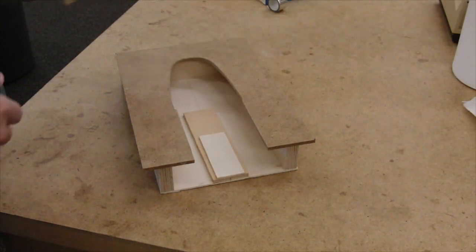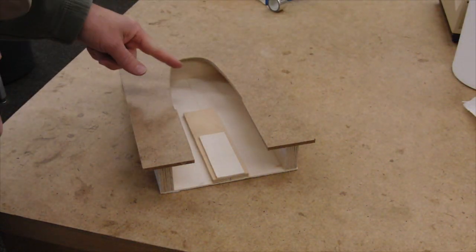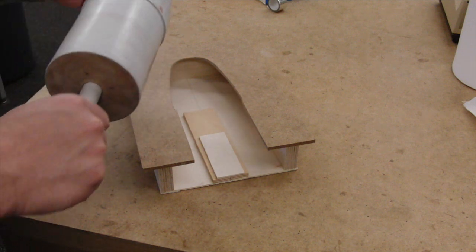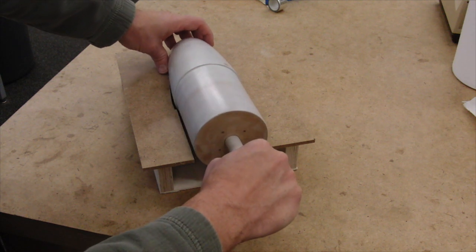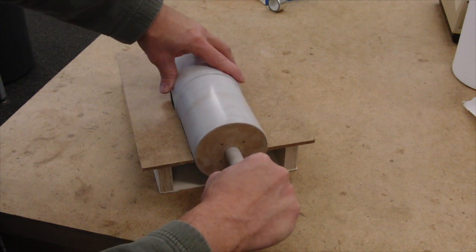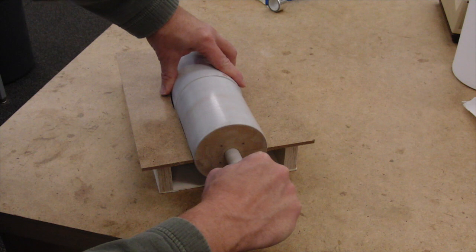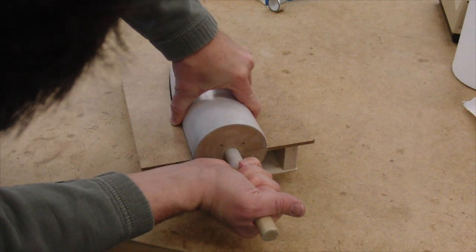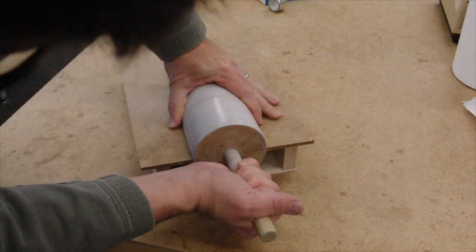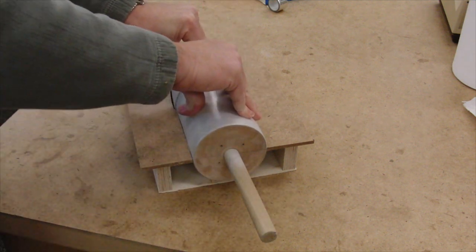Once you've got it to size, use some miscellaneous blocks underneath to shim it up so that it stays. We want it to slide into place, but we don't want it to fall all the way through when we're trying to work on it. So, use some blocks and line it up so that it's sturdy and we can work on it.